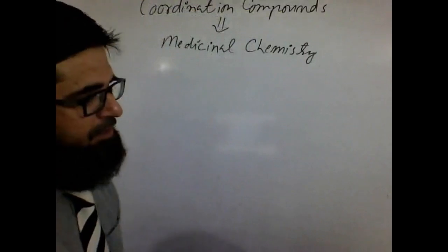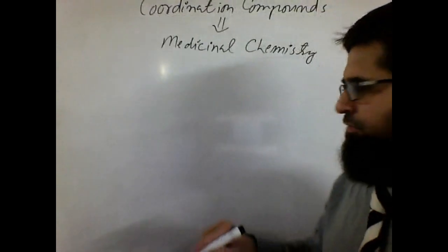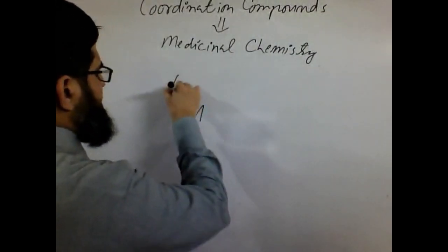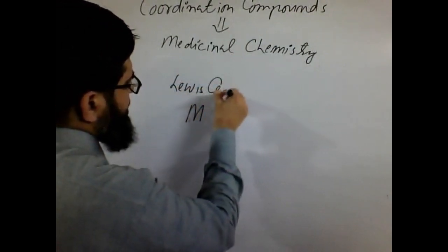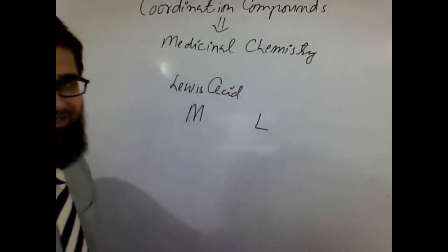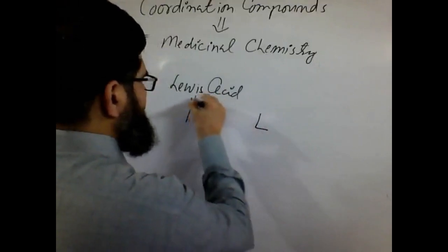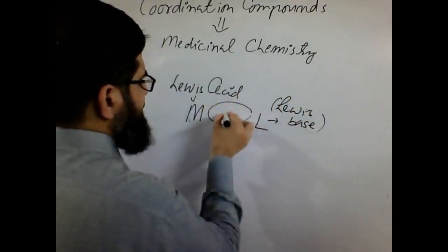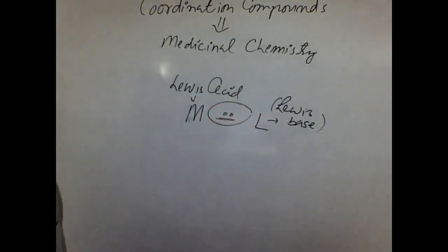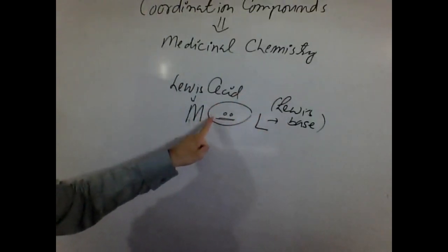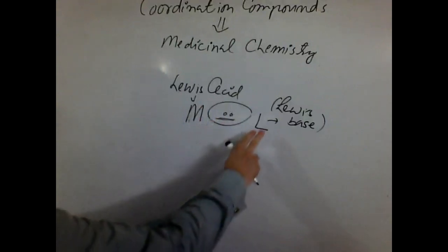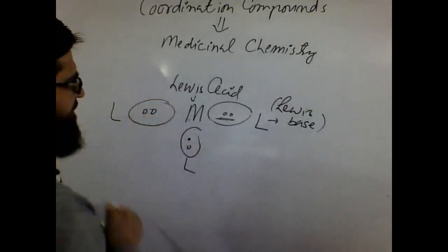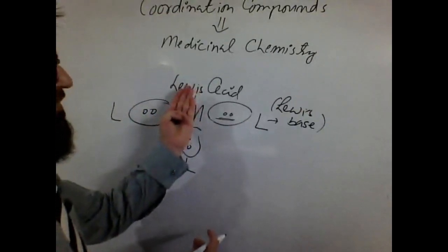Let me explain again a little about coordination compounds. The central metal atom is supposed to be a Lewis acid, connected with some ligands which are supposed to be Lewis bases. What do they actually do? The ligands donate lone pairs of electrons to the central metal atom, and those ligands could be more than one. Ligands surround the central metal atom giving lone pairs of electrons. So it is a combination of a Lewis acid and a Lewis base.